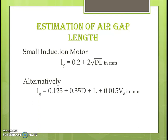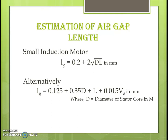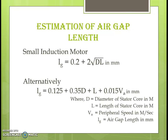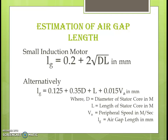Alternatively, we have another equation: LG = 0.125 + 0.35D + L + 0.015×VA, where VA is the peripheral speed in meters per second, D is the diameter of the stator core in meters, L is the length of the stator core in meters, and LG is the air gap length in millimeters. Mostly we use the equation LG = 0.2 + 2√(DL), with the answer in millimeters. Normally, 4 to 6 millimeters of air gap length is sufficient.